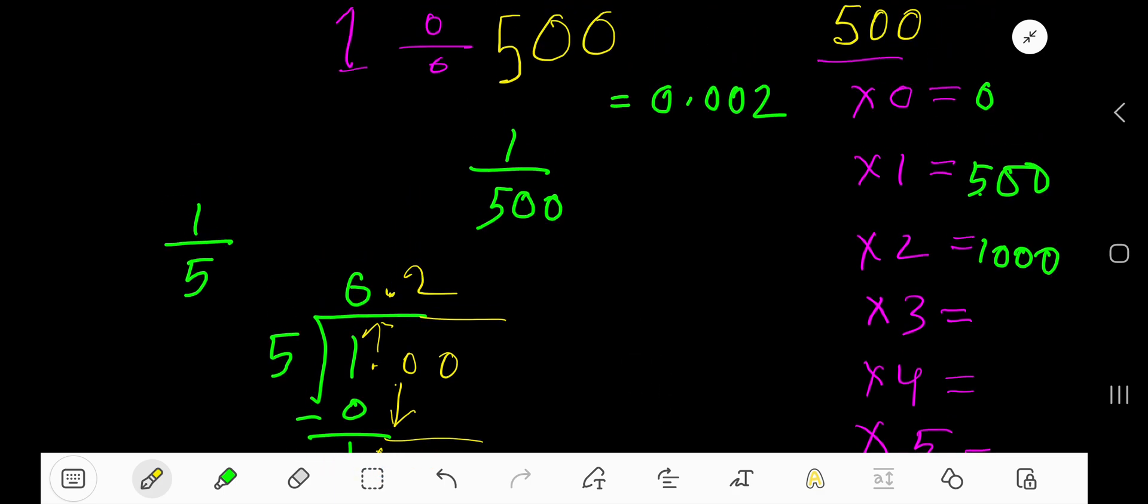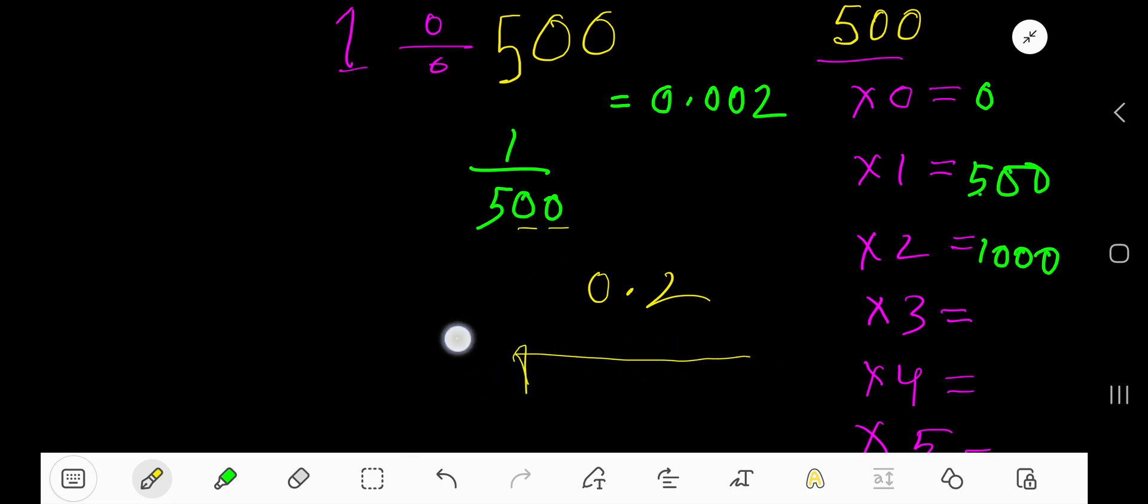Look, we're getting 0.2. But there are two zeros here in 500, so the decimal point will move from right to left two digits: 1 digit, then 2 digits. So our final result is 0.002, which is this.